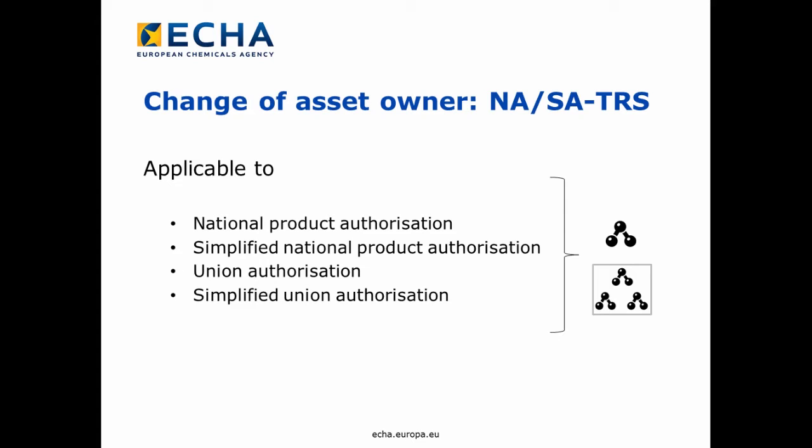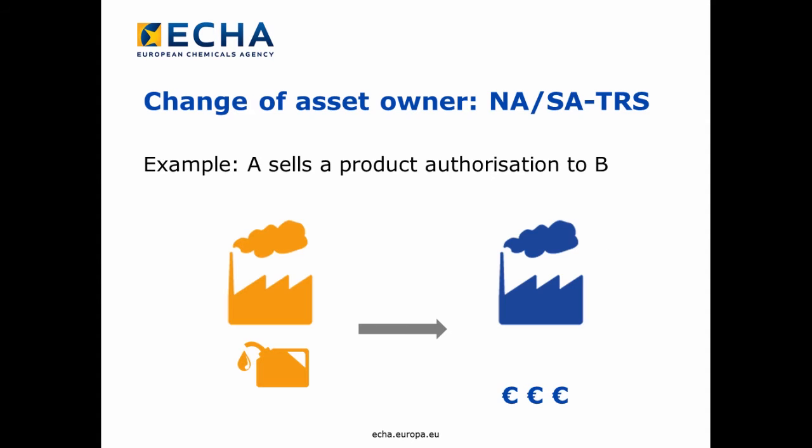In order to manifest the change of ownership, both legal entities have to participate in the process and we will explain to you how it works in R4BP3. Let's assume company A wants to sell a single biocidal product authorization or a product family covering a whole product line to company B.